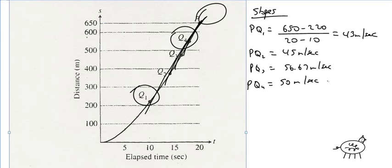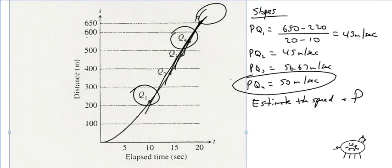Okay, so those are all the different estimating the slopes. So if I ask you guys to estimate the speed at p, you're going to use this guy right here. The slope of that line, of that secant line, so the estimate of that speed is then 50 meters per second.